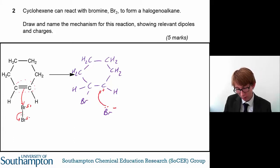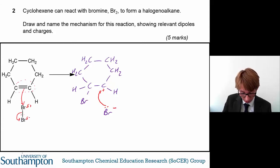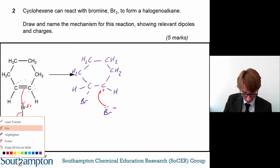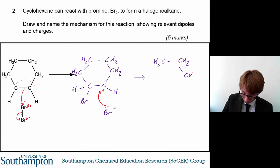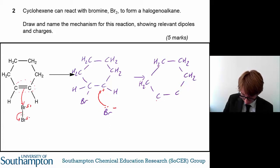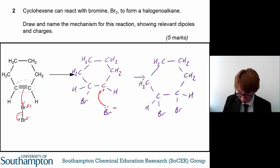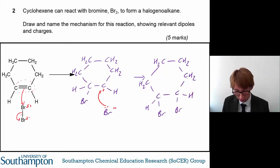The negative bromide ion reacts with the positive carbocation — the lone pair of electrons on the bromide attacks that positive charge, forming a new bond. What you end up with is this molecule here, with H, Br, Br, H, giving you the dibromo product. So there's the drawing of the mechanism.